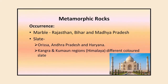Marble rocks are widely formed in Rajasthan as well as in Madhya Pradesh — the famous Bheraghat of Madhya Pradesh has abundant marble rocks. Marble is also found in Bihar. Slate is found in Odisha, Andhra Pradesh, and Haryana, and also in the Kangra and Kumaon regions of the Himalayas in different colors. The Taj Mahal, pictured in the slide, is made up of white marble rocks, which are metamorphic rocks.